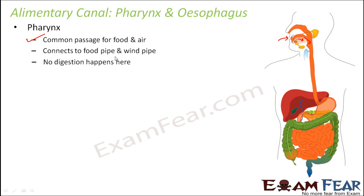Pharynx connects to the food pipe and the wind pipe. We breathe through our nostrils, and air moves through one part while food moves through another. This common passage for both food and air is called pharynx. Pharynx connects to the food pipe as well as to the wind pipe. The air we breathe in goes into the wind pipe, and the food we eat goes into the food pipe.